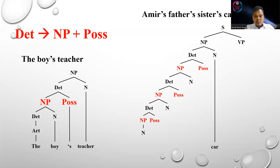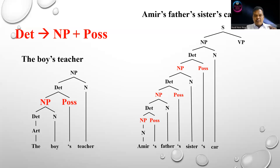We have finished analyzing the NP that contains multiple NP-POS structures. The NP is represented by the phrase 'Amir's father's sister's car.' We can conclude that the more elements in the NP, the more NP-POS structures we have. In this case, we have three NP-POS structures.